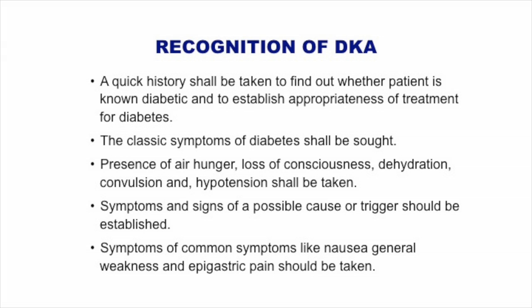It is difficult to control malaria and TB fast enough to also control DKA. Quick history: look at the symptoms, look at the signs.